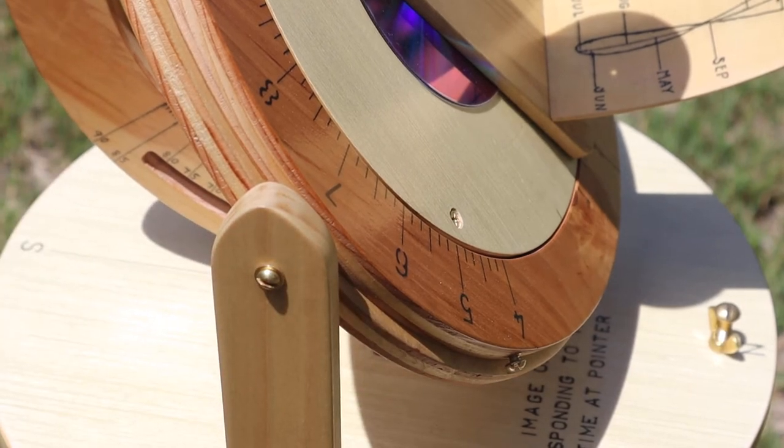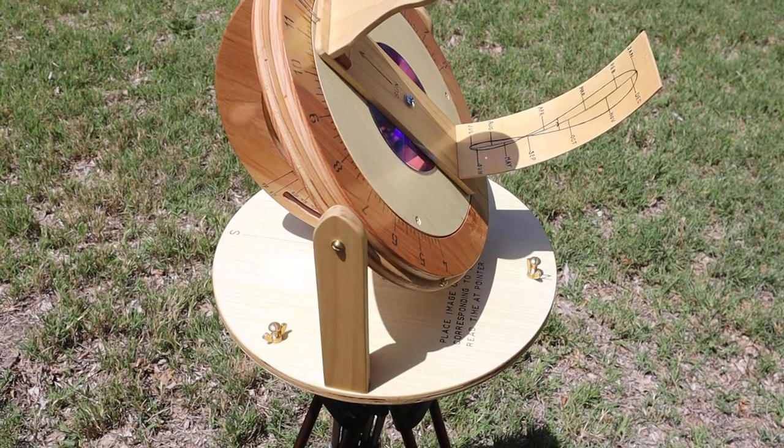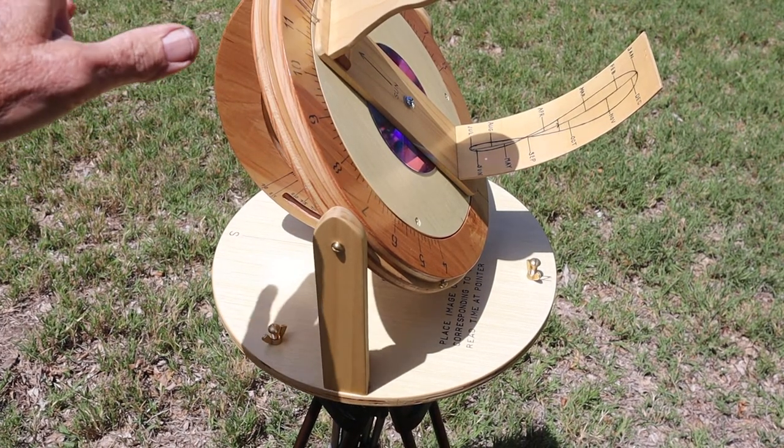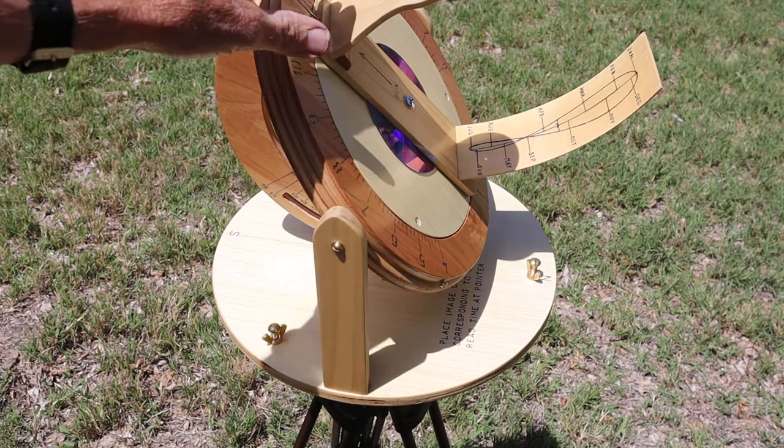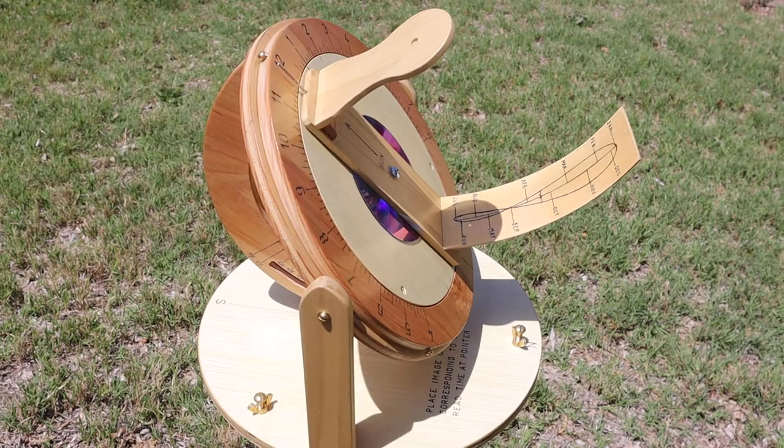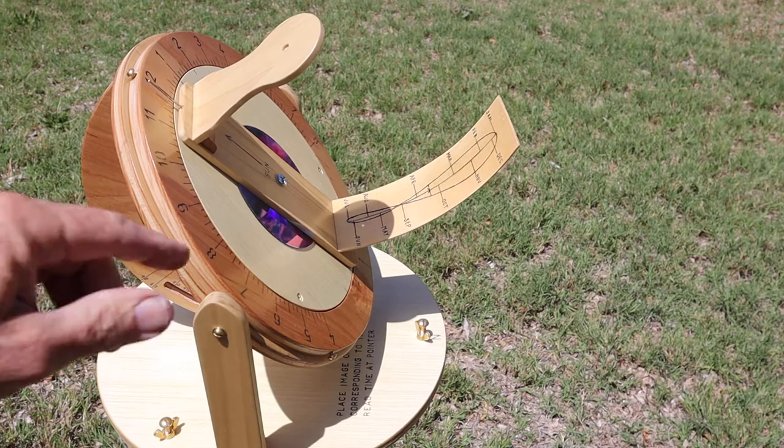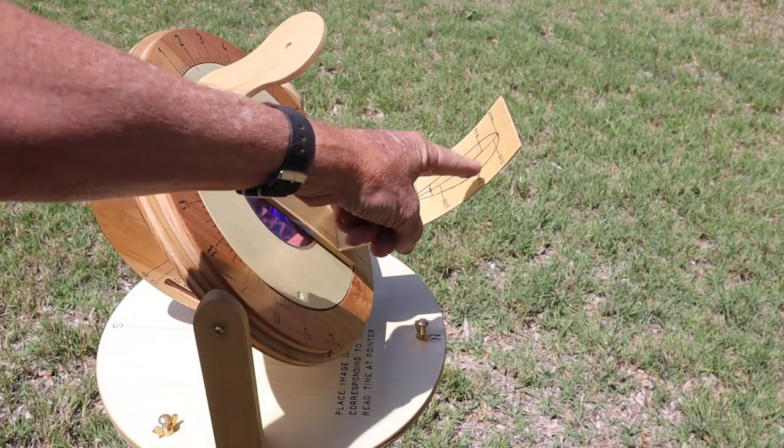So once you get that set up, then the next thing you do is there's a little back part here. Swing the camera around a little. There's what they call a lima, or this little figure eight.